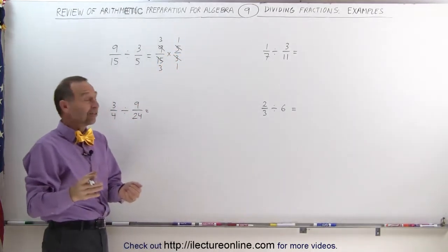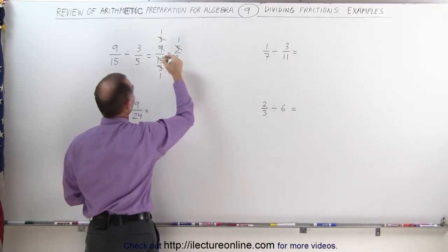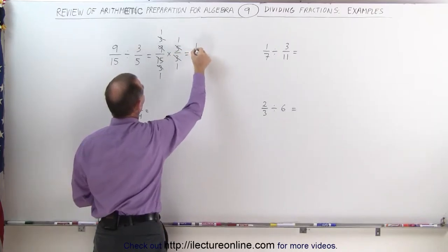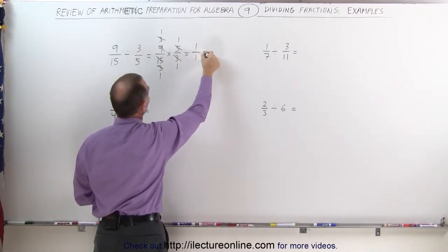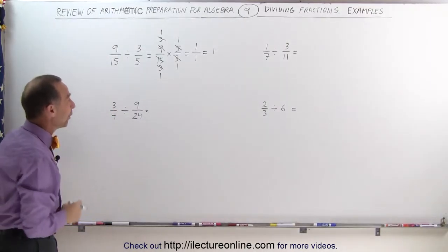And you can continue to simplify because 3 and 3 can be divided by 3. This becomes 1, this becomes 1, and finally you get 1 times 1 divided by 1 times 1, which is simply 1. So 9/15 divided by 3/5 is equal to 1.